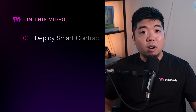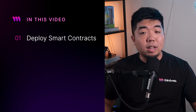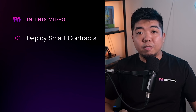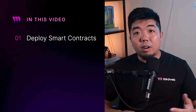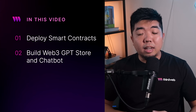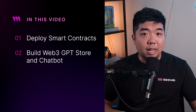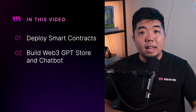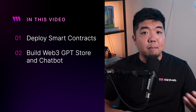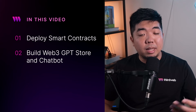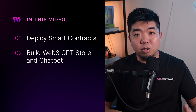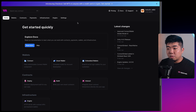Here's an overview of what we'll cover: first we'll deploy our smart contract to create NFTs for our different GPT models, then we'll build out our application with a chat feature allowing users to select which model they want, and finally a store where people can mint or claim these NFT GPTs. With that covered, let's jump on the computer and get started.